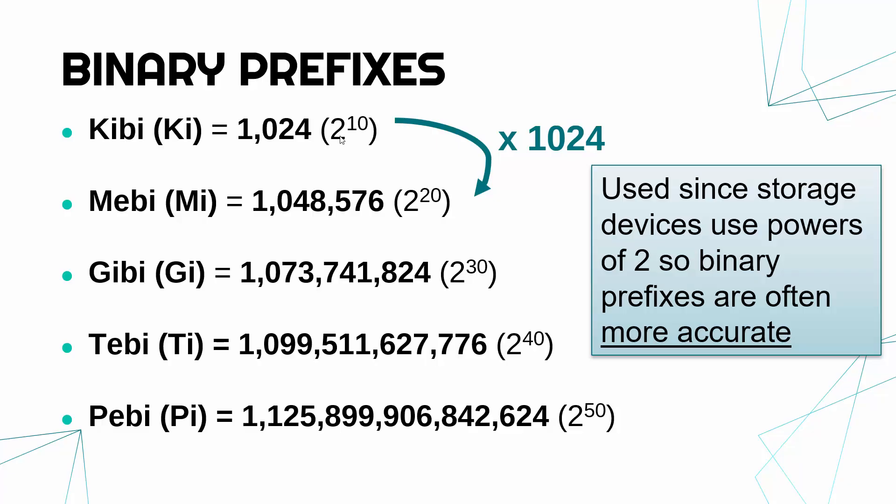And so to use a binary prefix often means you're going to be more accurate. Part of the issue was in early storage devices, the designers saw they've got 1,024—that's similar to a thousand—and so they rounded down. So it just led to some inaccuracies because it wasn't quite matching the actual capacity. Now that inaccuracy gets worse over time because you start to get really quite far from the metric equivalent.